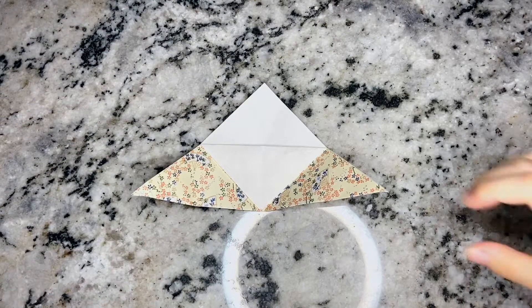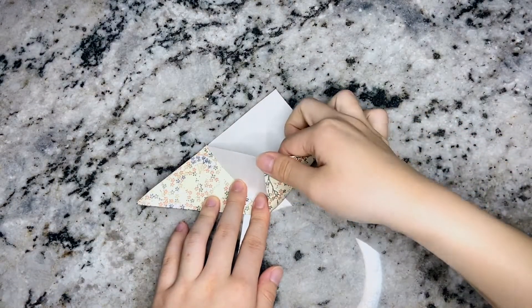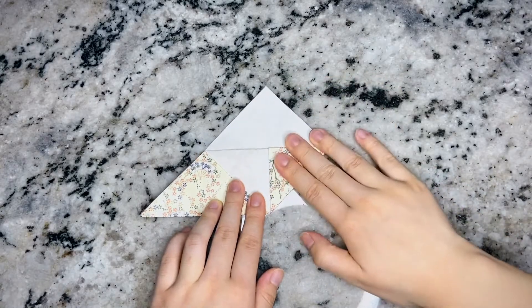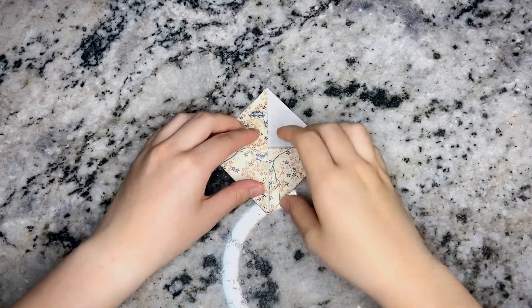Bring the bottom right corner back up and fold it into the flap that was just created. Do the same to the other side.